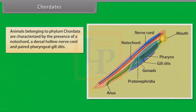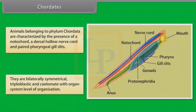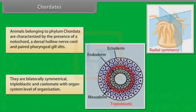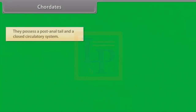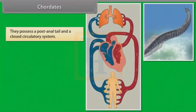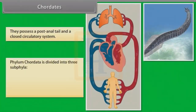Animals belonging to phylum Chordata are characterized by the presence of notochord, a dorsal hollow nerve cord and paired pharyngeal gill slits. They are bilaterally symmetrical, triploblastic and coelomate with organ system level of organization. They possess a post-anal tail and a closed circulatory system. Phylum Chordata is divided into three subphyla.